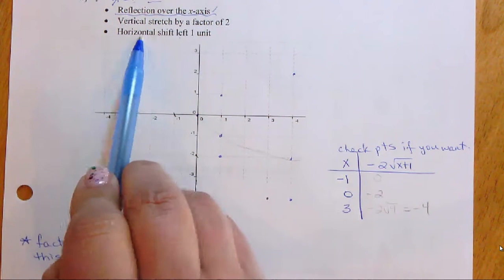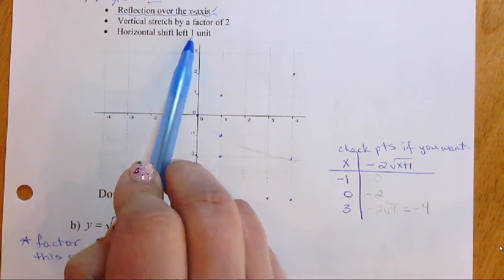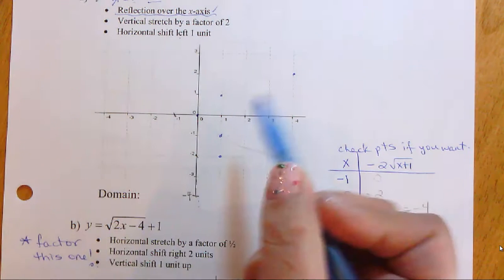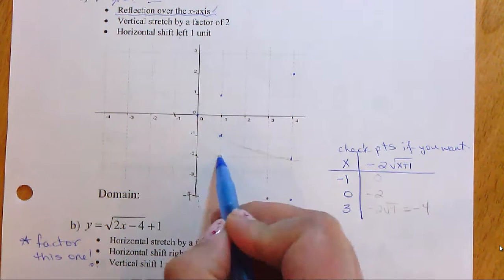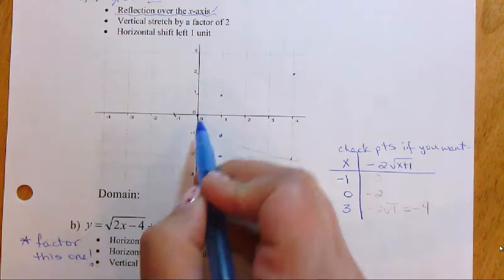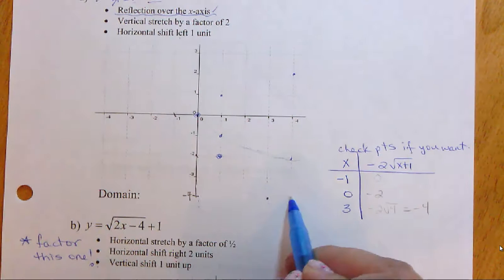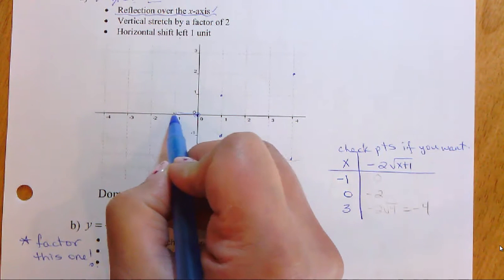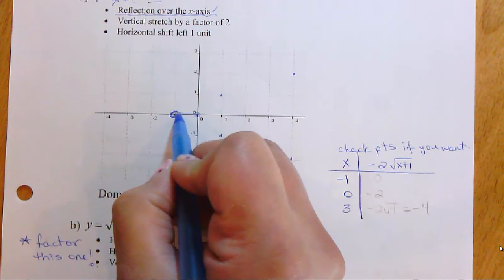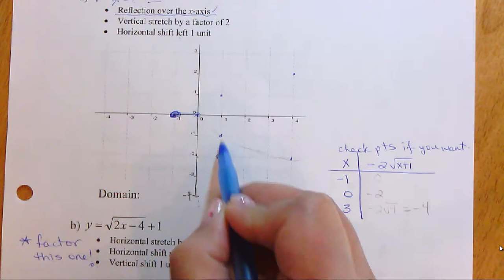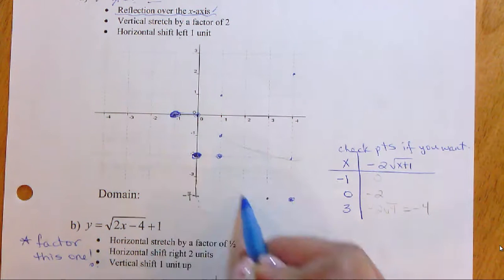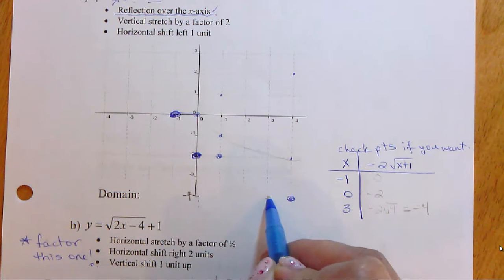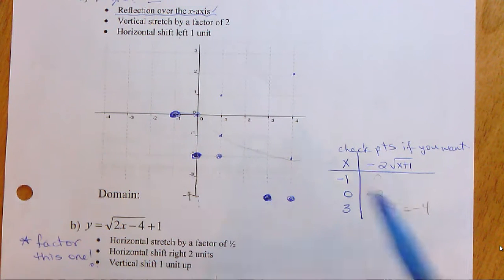Now shift everything horizontally left one unit. After the stretch, our points were at (0,0), (1,−2), and (4,−4). Moving left one: (0,0) goes to (−1,0), (1,−2) goes to (0,−2), and (4,−4) goes to (3,−4). These are the points we use to draw the final graph.